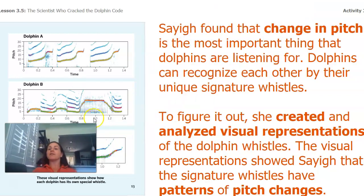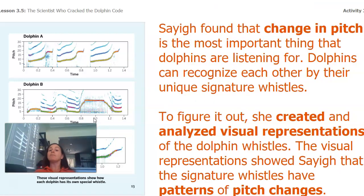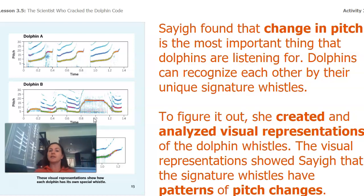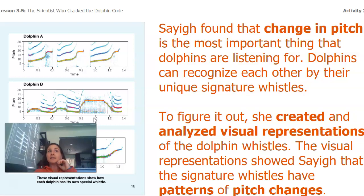So Sayig found that change in pitch is the most important thing that dolphins are listening for — they're listening for how high or low the sound is. And dolphins can even recognize each other by their unique signature whistle. Each dolphin has their own signature whistle and they can listen for changes in pitch and really actually recognize each other.